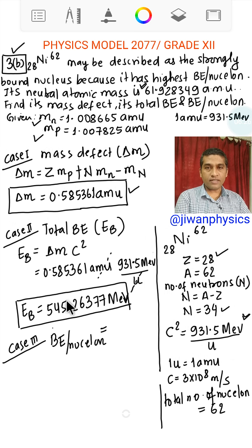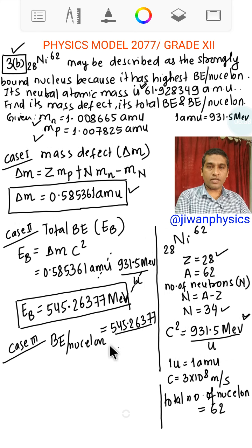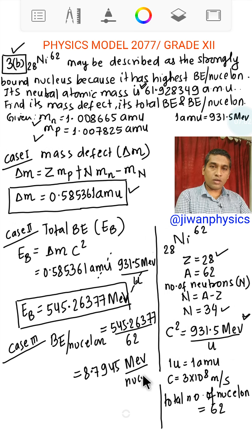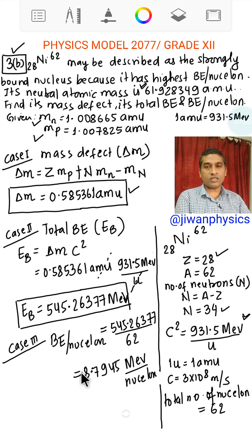We have binding energy 545.26377 divided by number of nucleons is 62. After simplifying or calculating this, we get 8.7945 MeV per nucleon. This is the value of binding energy per nucleon.